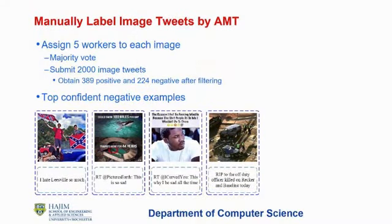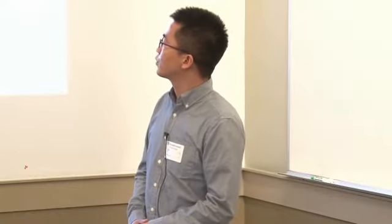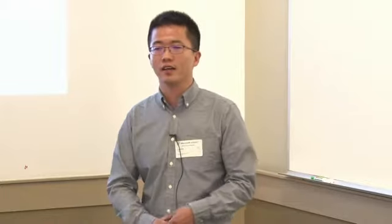We also manually labeled a small dataset of about 2,000 paired image-tweets, with five workers assigned to each sample. We kept samples where at least four or five workers agreed, using this as a small testing dataset to evaluate performance of models trained on the large-scale weakly labeled dataset.